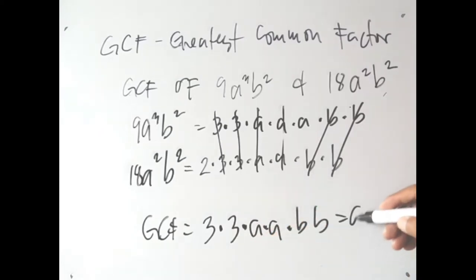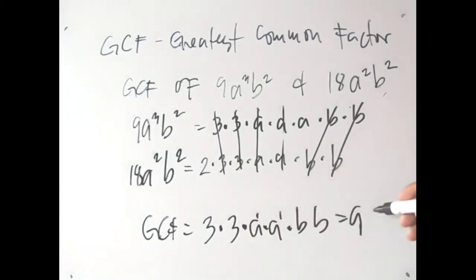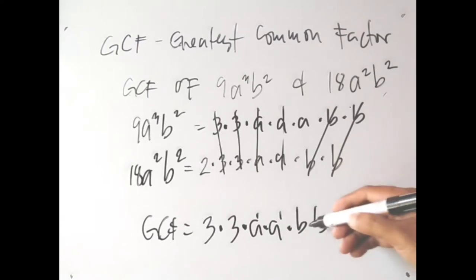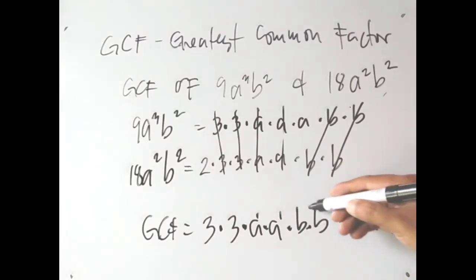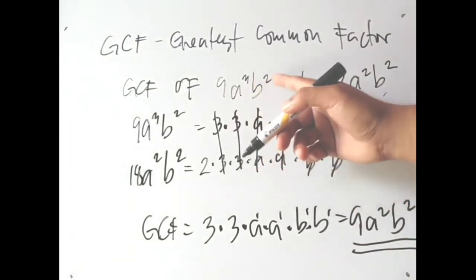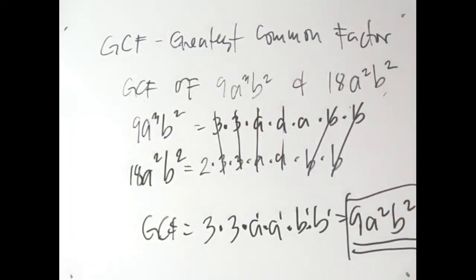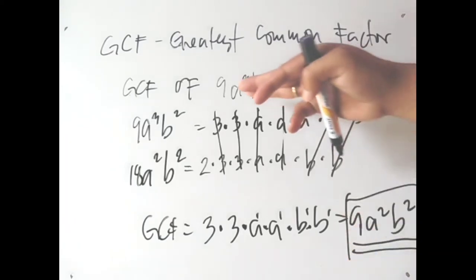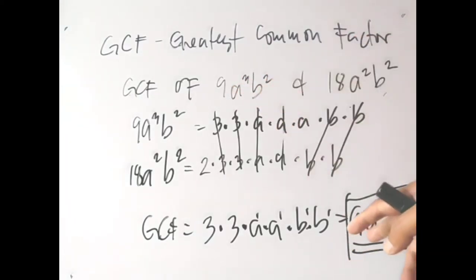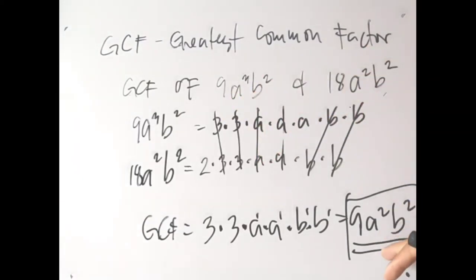From the common factors: we have 3 and another 3 (giving 9). From the variables: two a's (giving a²) and two b's (giving b²). Multiply them all: 9 times a² times b² — so the GCF of 9a³b² and 18a²b² is 9a²b². This is the common factor of the two terms that can divide both of them.